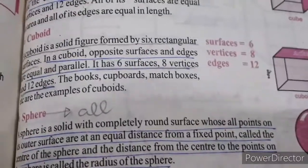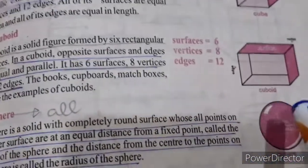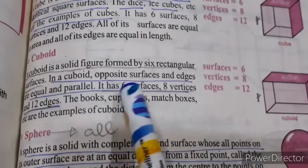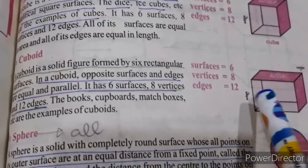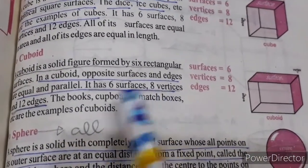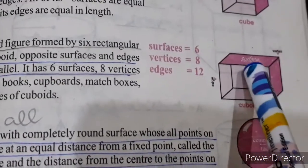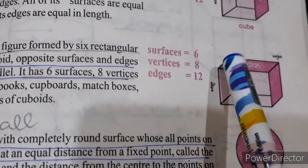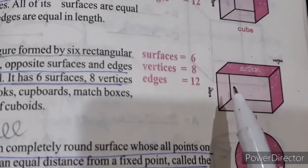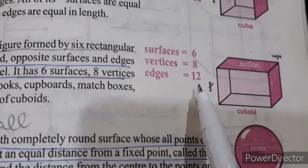Now our next definition: a cuboid. A cuboid is a solid figure formed by six rectangular surfaces. A cube is in a square shape and a cuboid is in a rectangular shape. In a cuboid, opposite surfaces and edges are equal and parallel. Surfaces: six, vertices: eight, edges: twelve — same as a cube.